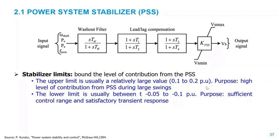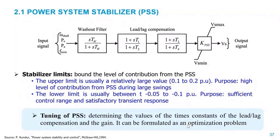We sometimes need to bound the output of the stabilizing feedback loop to avoid undesirable changes — such as too-high contributions during large swings — and to define boundaries for the control range. The tuning of a stabilizer can be done in different ways: for a single device represented as a single machine infinite bus, we can apply classical techniques like the Nyquist criterion. However, for a very large system, obtaining such a representation is cumbersome. One of the most preferred approaches in recent years is an optimization problem formulation to determine the right parameters — the right gain, time constants, and limits.